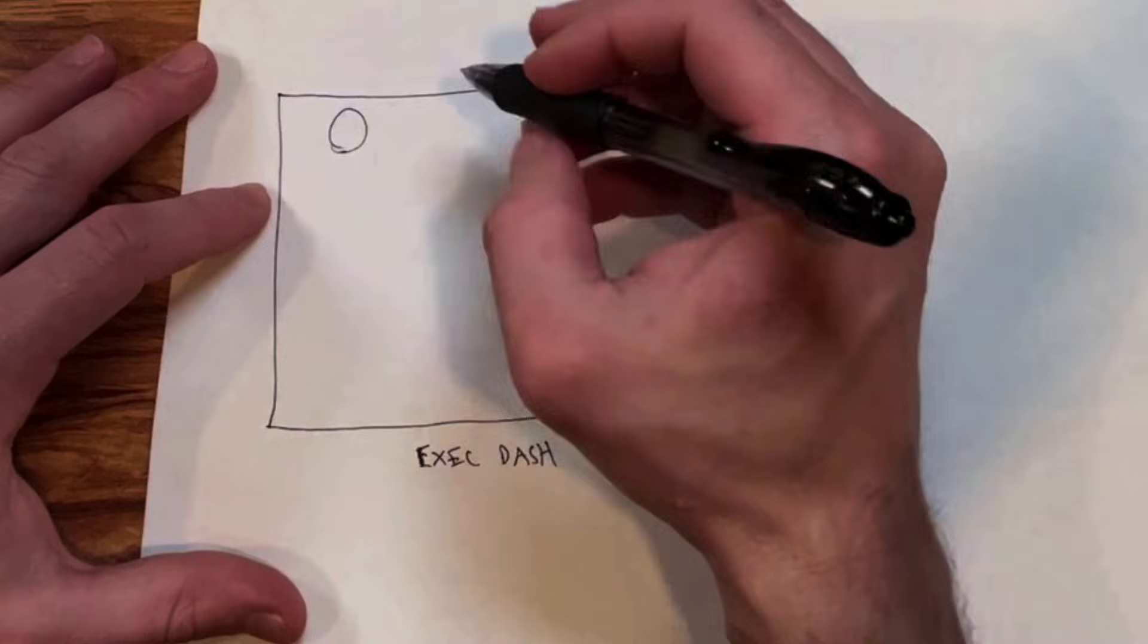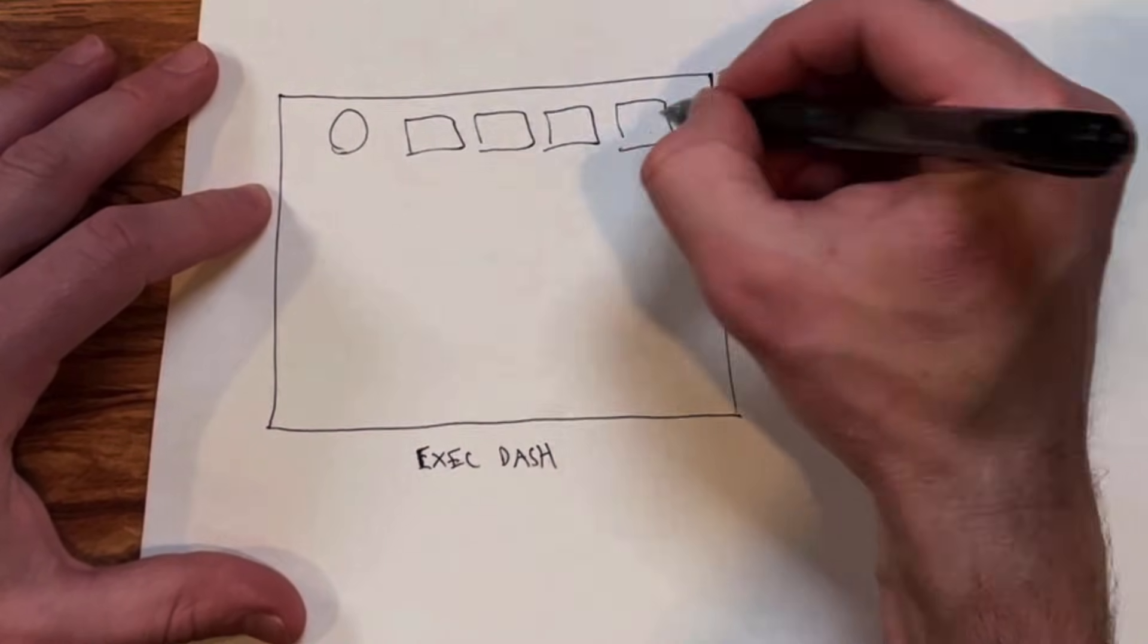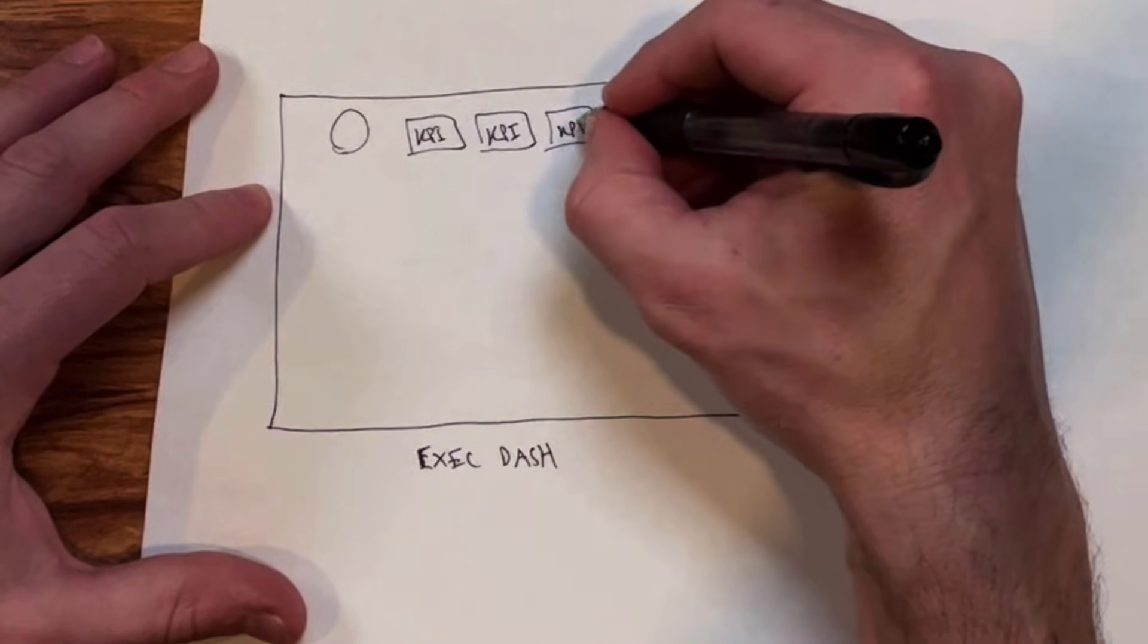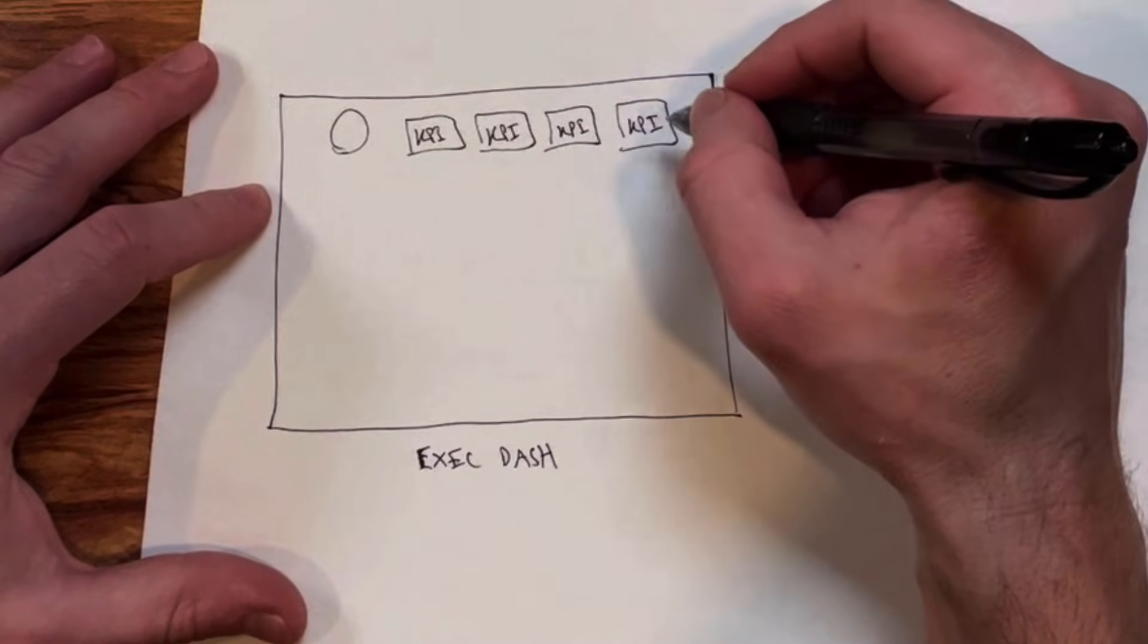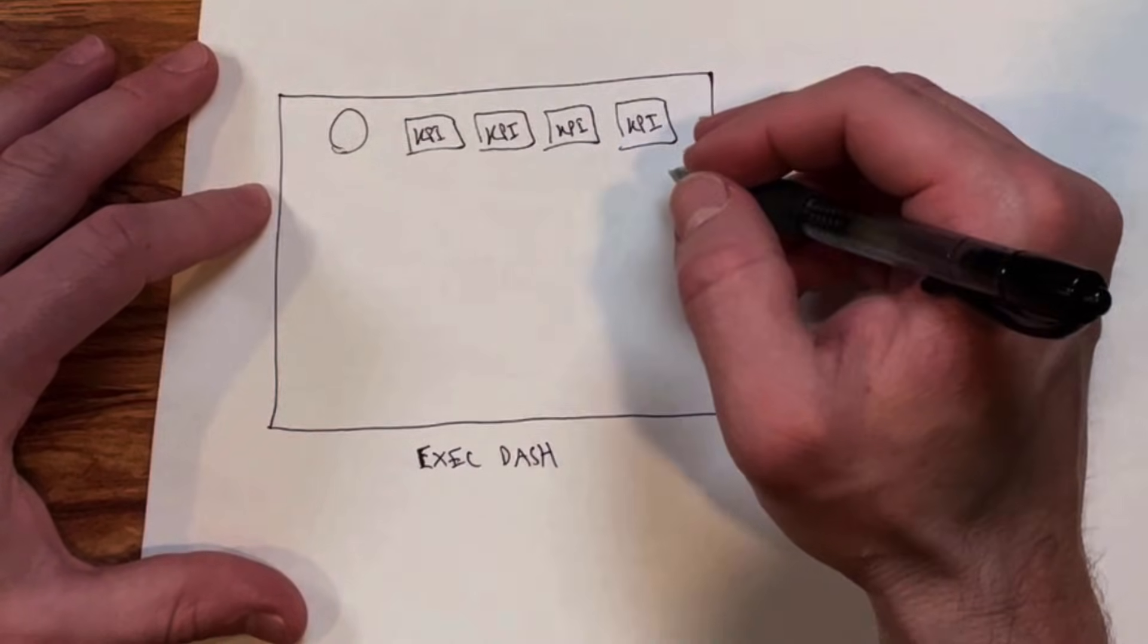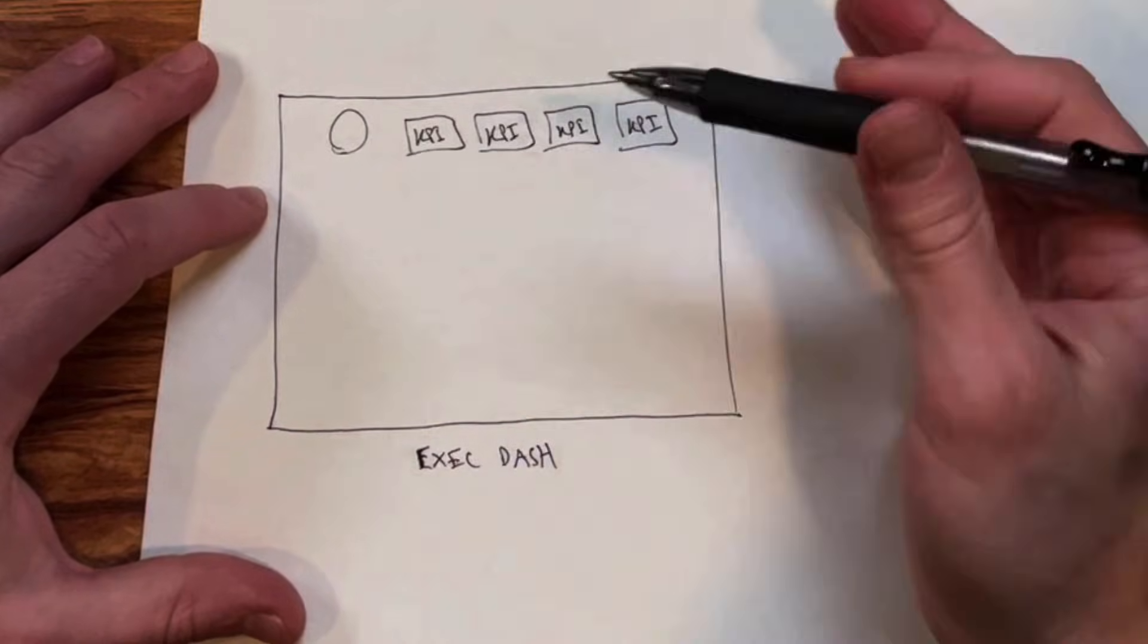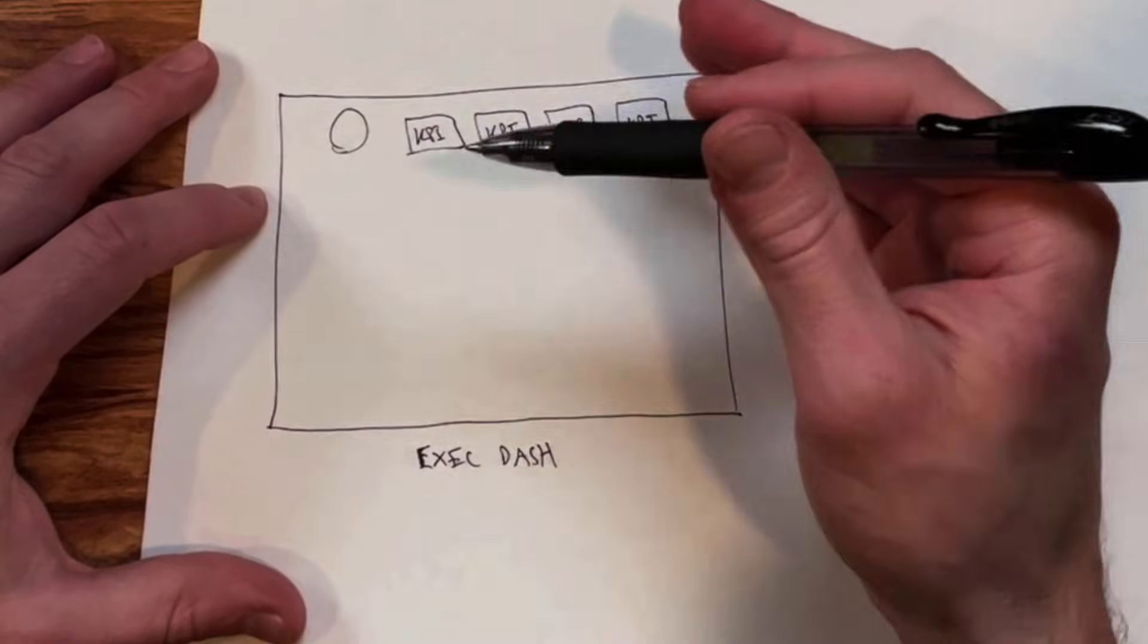What I typically like to do is put the company brand or logo right there to set the immediate context, and then put my big KPI cards right there in the top right. These are going to be our high level overall numbers—things like total profit, total orders, total revenue—things that executives and the manager team will really care about seeing first and foremost.